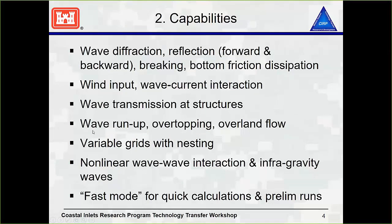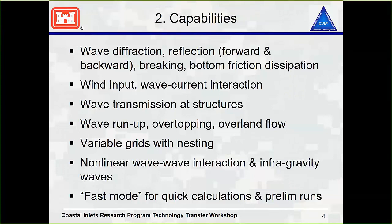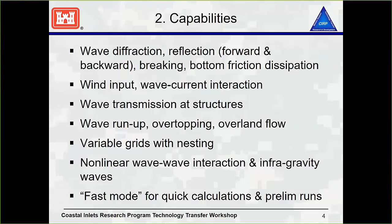There are different capabilities for CMS-Wave. We've got wave diffraction and reflection, breaking, bottom friction dissipation, and refraction. We have wind input that will initiate wave motion, waves and current interactions, wave transmission at structures — where you can specify some permeability at those structures or a height for a floating structure so that some wave energy will actually go underneath and around it. Wave run-up, overtopping, and overland flow are buttons you can push in the model control to turn on, and it will calculate those values based on depth and energy and go a little bit farther inland.